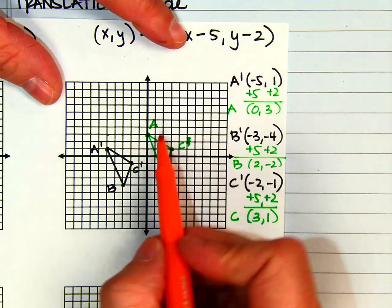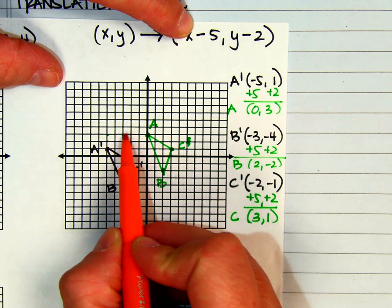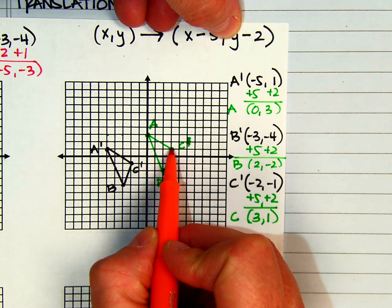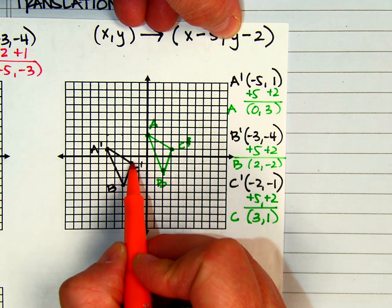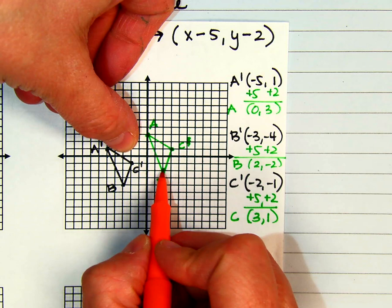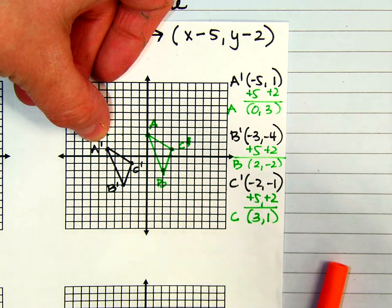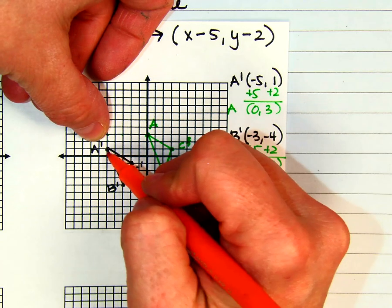So if I'm at A, left 5 and down 2. That checks. Same thing from C. Left 5 and down 2. That one checks. B to B prime. I forgot my prime over here. Left 5 and down 2. So it checks. So that means that this shape is congruent to that shape.